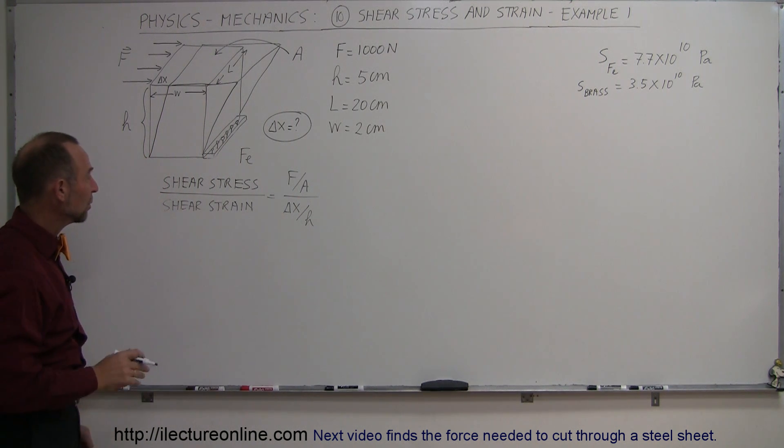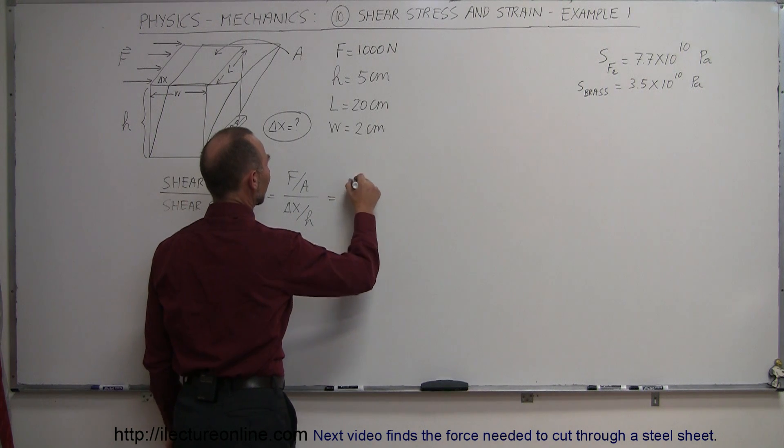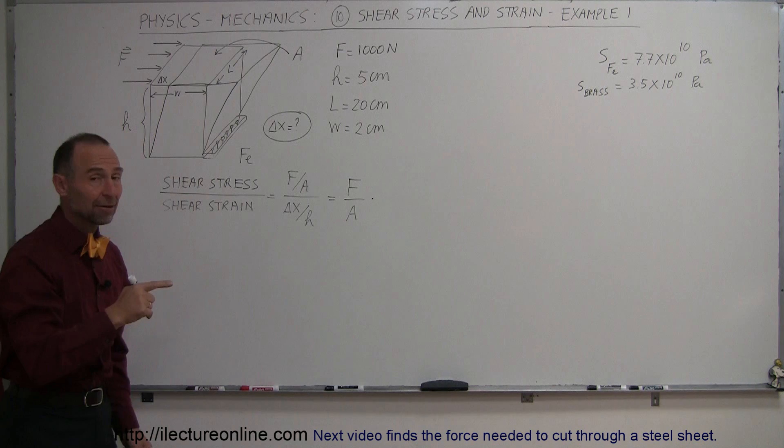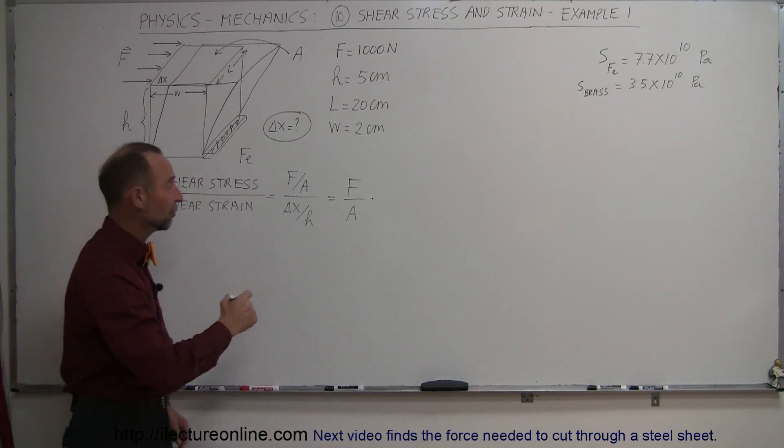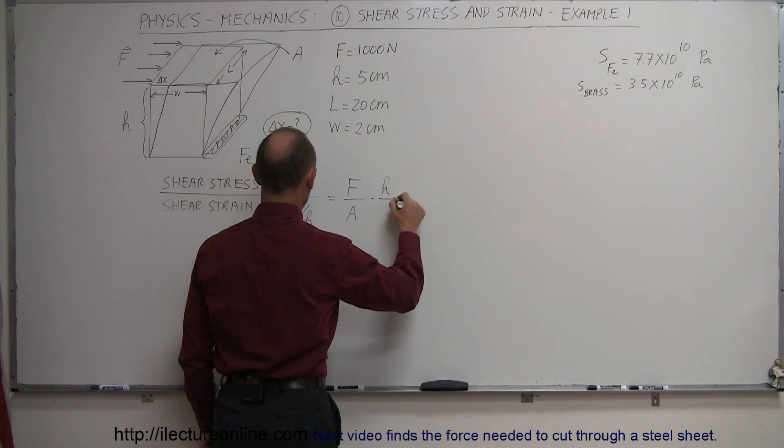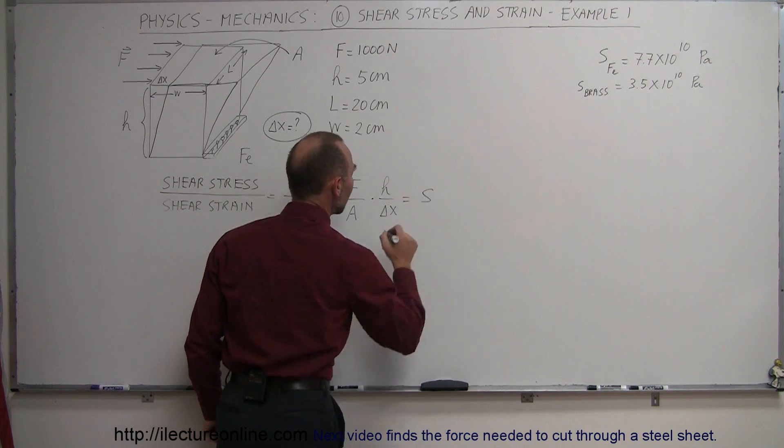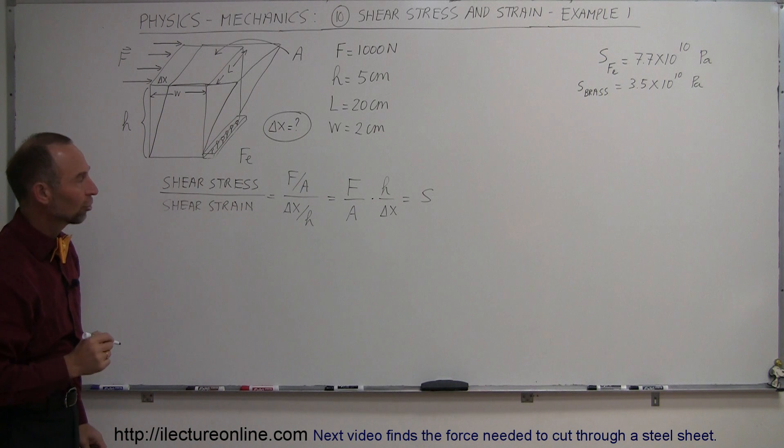All right, I'm going to rewrite this a little bit, so this can be written as F divided by A, times—and again, dividing by a fraction is the same as multiplying by its inverse—so times H over delta x, and of course, the ratio of the shear stress over the shear strain is equal to the shear modulus S.